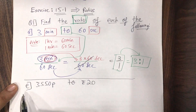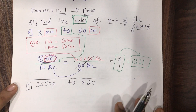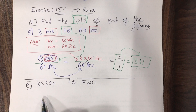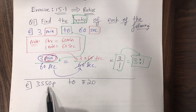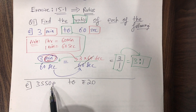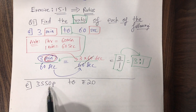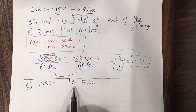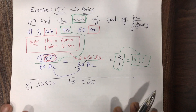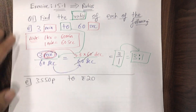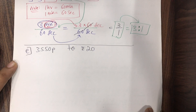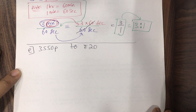Now sub-question E: 3550 paise to rupees 20. We have to find the ratio. It's very simple. First, I'll give you a note: 1 rupee is equal to 100 paise.